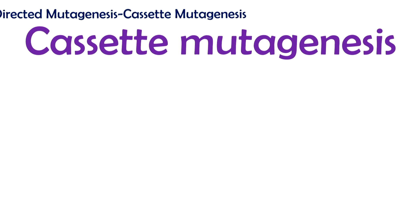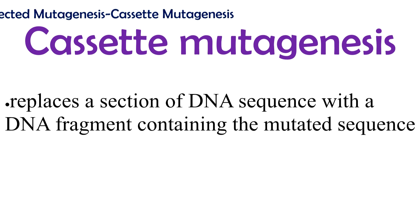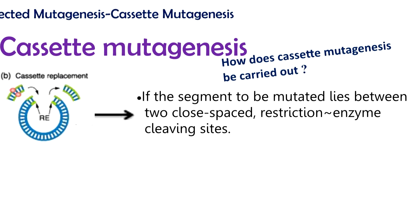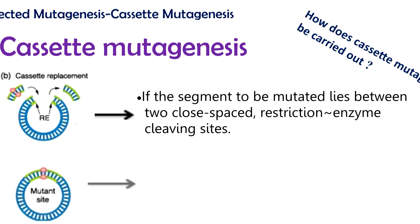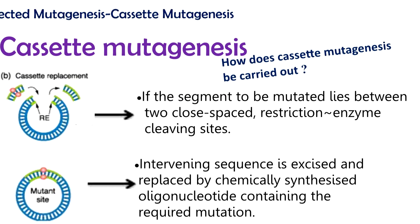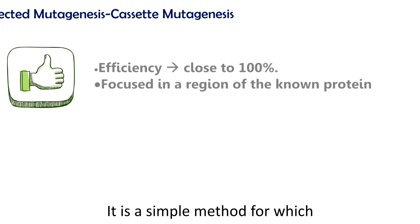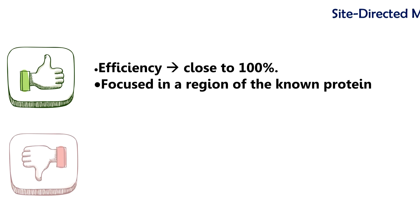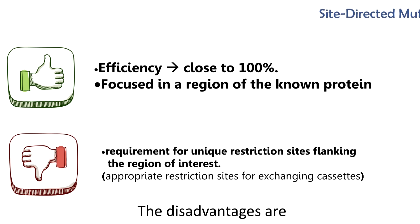Cassette mutagenesis is a simple method by replacing a section of DNA sequence with a DNA fragment containing the mutated sequence. If the segment to be mutated lies between two closely spaced restriction enzyme cleavage sites, the intervening sequence is excised and replaced by a chemically synthesized oligonucleotide containing the required mutation. It is a simple method for which the efficiency of mutagenesis is close to 100%. The disadvantage is the requirement for unique restriction sites flanking the region of interest.